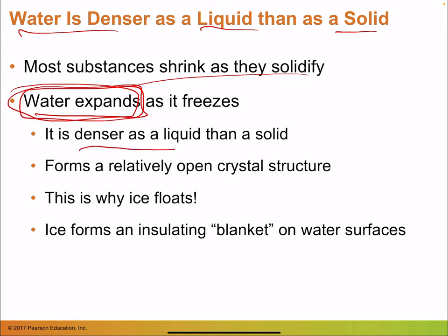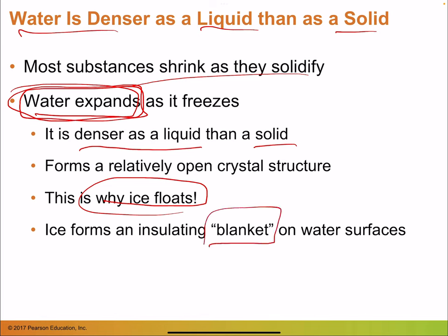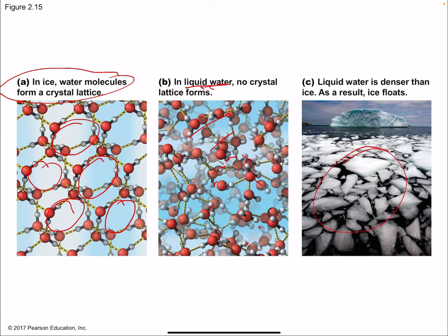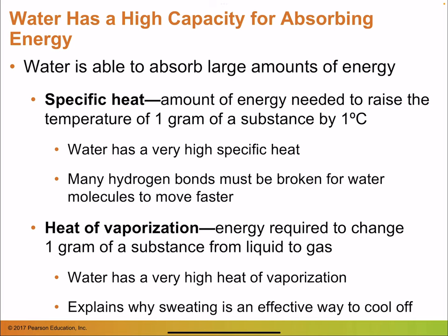Because water is denser as a liquid, ice floats — creating an insulating blanket on the surface. This is very important: if ice sank, it would kill aquatic life. Looking at water molecules in ice, there are large open gaps between them when frozen, but when liquid they're much closer together. That's why ice floats.